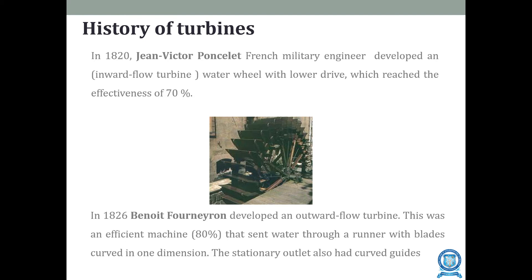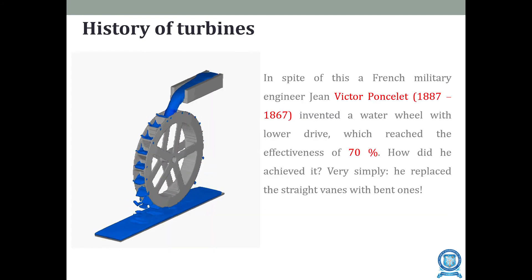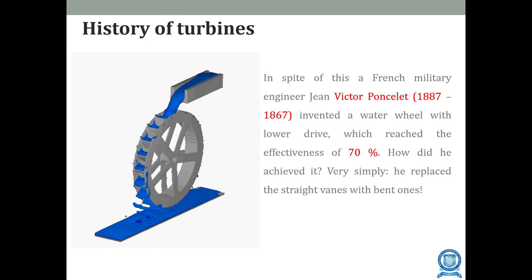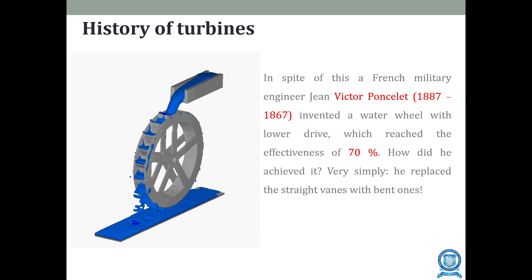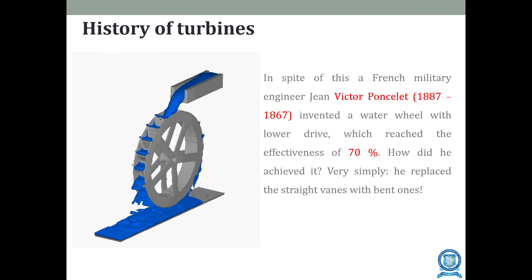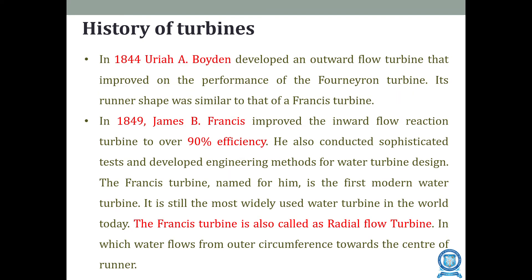The improved machine was developed by scientist Benoit Fourneyron. In 1844, Boyden developed an outward flow turbine with further improved efficiency compared to Fourneyron's turbine, and its runner shape was similar to that of the Francis turbine. Subsequently, Francis improved the inward flow reaction turbine to over 90% efficiency, up from the previous 70%. Sophisticated tests were conducted, and they developed standard engineering methods for water turbine design.